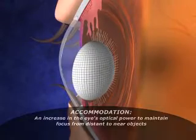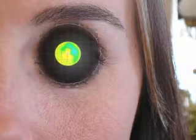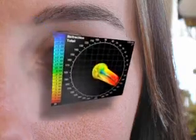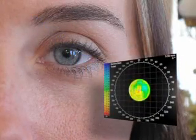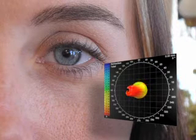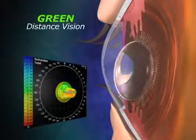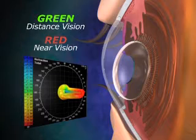One way to analyze the function of the eye and to capture the dynamic that occurs when focus shifts from far to near and back again is to use wavefront measurements. Wavefronts are 3D images that map how light rays travel through the eye. The wavefront images in this video are color-coded: green indicates distance vision, red indicates near vision or myopia, and blue indicates hyperopia.